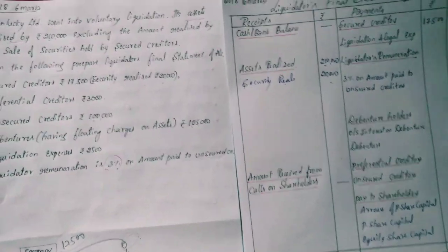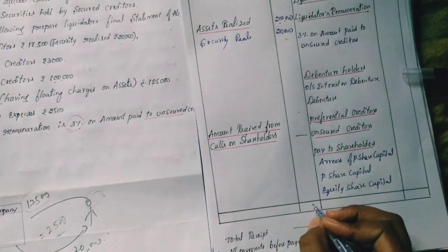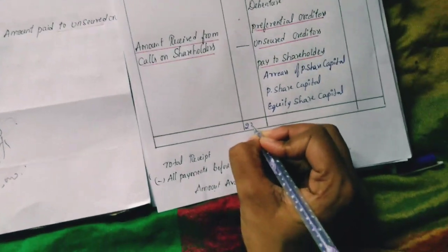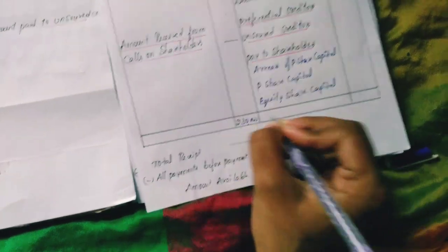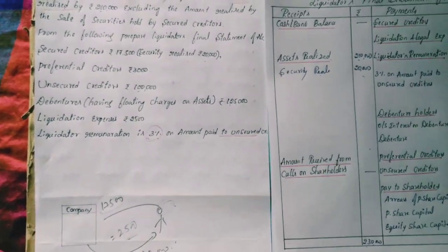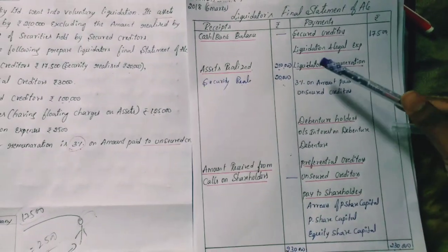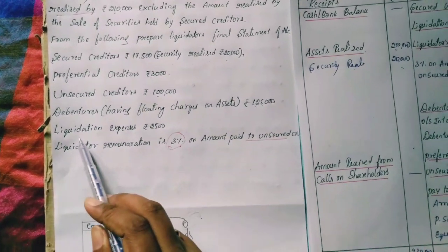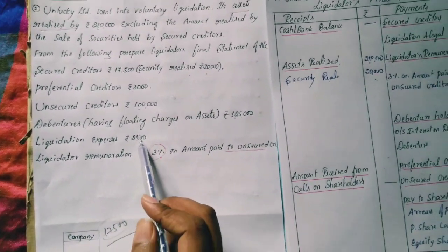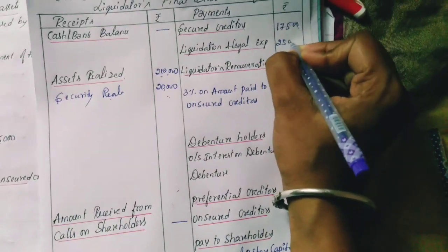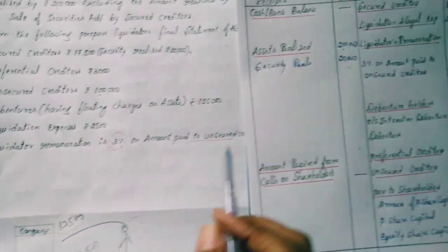Total: Rs.59,000 received. Liquidation expenses: Rs.2,500. Remuneration is next to calculate. Liquidation expenses are Rs.2,500.